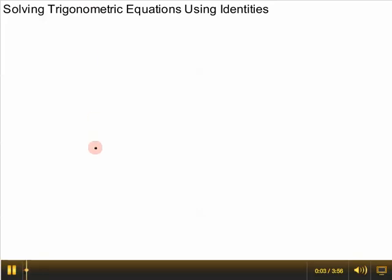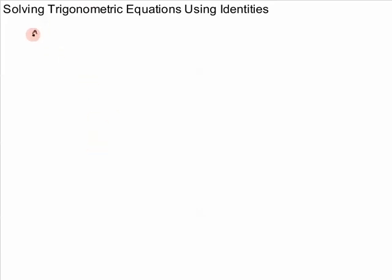Okay, so this example, I'm going to show you a couple different ways to solve. If I ask you to solve cosine squared of x minus sine squared of x equals 0, you've got a couple choices.